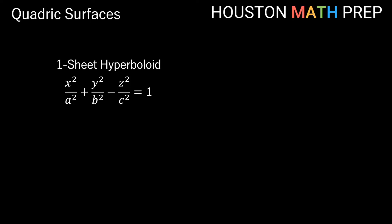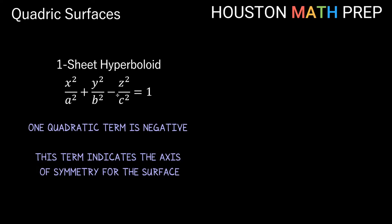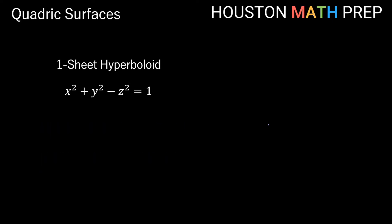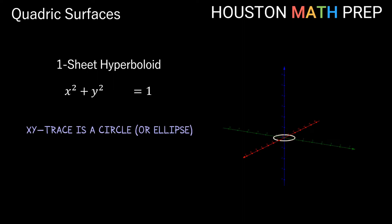The remaining two quadric surfaces have similar names depending on whether we have one connected surface or two separate ones. The hyperboloid of one sheet has an equation similar to an ellipsoid, except that one quadratic term is negative — that negative term indicates the axis of symmetry. In our example x² + y² − z² = 1, setting z = 0 gives x² + y² = 1, which is a circle for the xy trace. With a = b = c = 1 it's a circle; if those constants differ, it would be an ellipse.